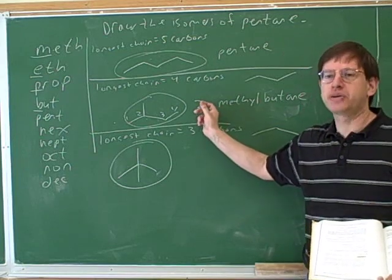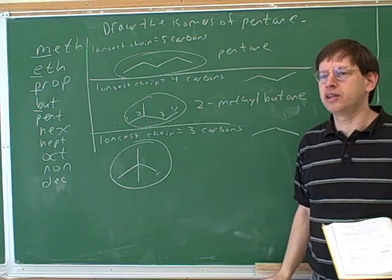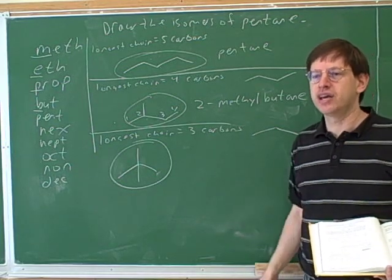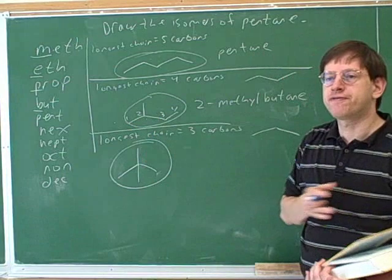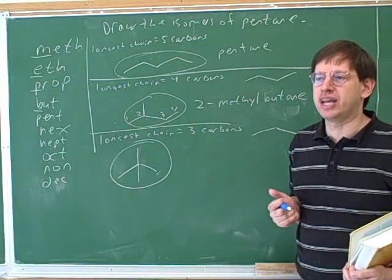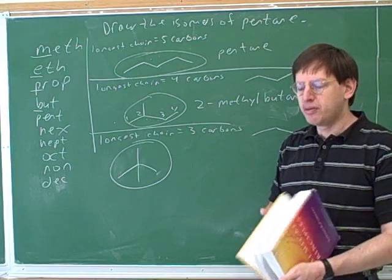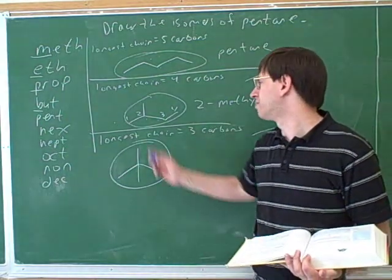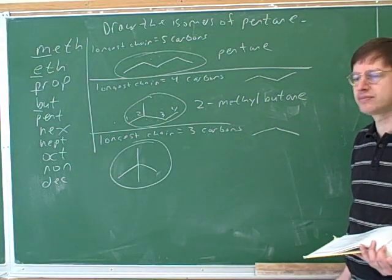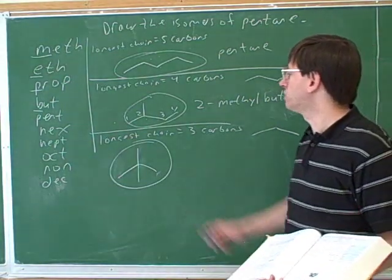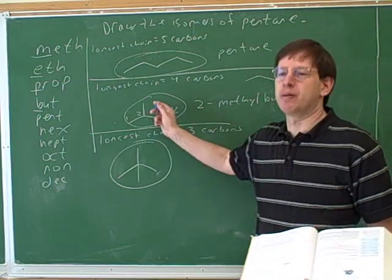The number is what we call a locator. For every substituent, you need a locator to say where the substituent is — that's why we number the parent chain. The first step is to number the parent chain; don't skip it. Physically write down the numbers, make sure it's the longest chain, and number to give substituents the lowest possible numbers. So this is 2-methylbutane — a logical name. If you saw this name, you should be able to reconstruct this compound.